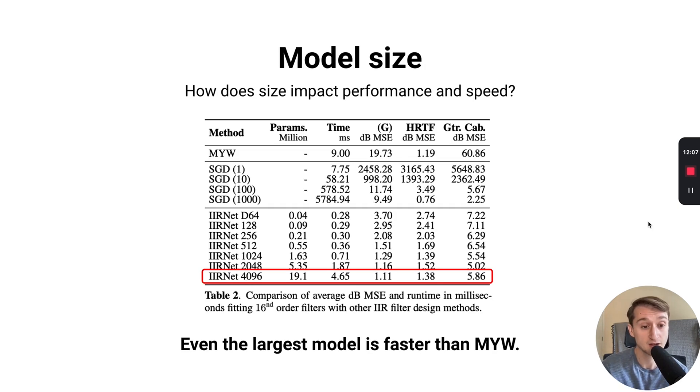Now with regards to model size and the speed of the models, we trained a large number of different sized versions of IIRNet, all the way from 64 hidden dimensions up to 4,096 hidden dimensions with a model with over 20 million parameters. As you would expect, as we increased the model size, we saw that the performance increased as well, lowering the overall mean squared error. What we found was that even our largest model with 20 million parameters, which achieved very good reconstruction error, was even faster than modified Yule-Walker. Even our largest model was still faster. We could make the model even faster by reducing the size at some cost of performance, as shown here.